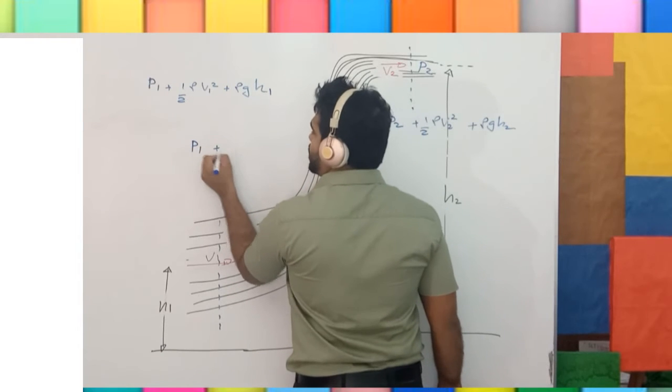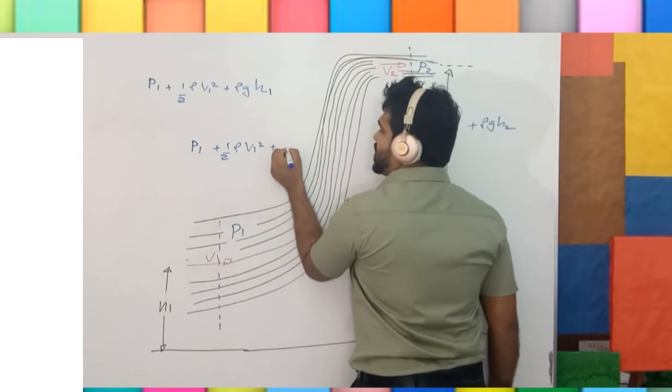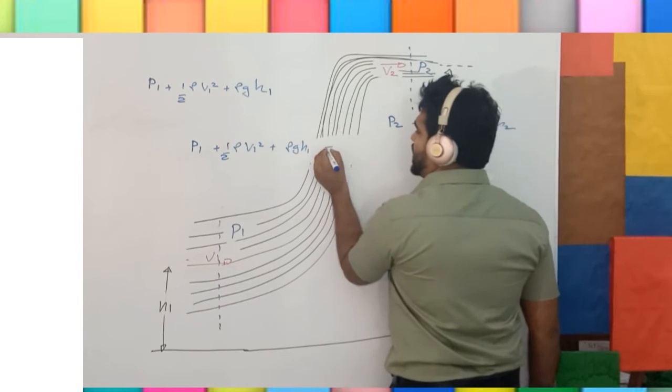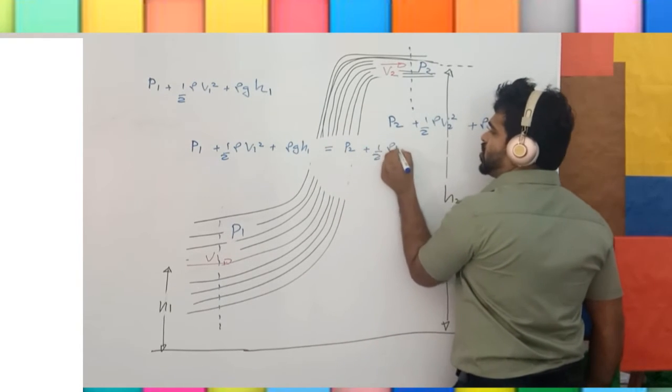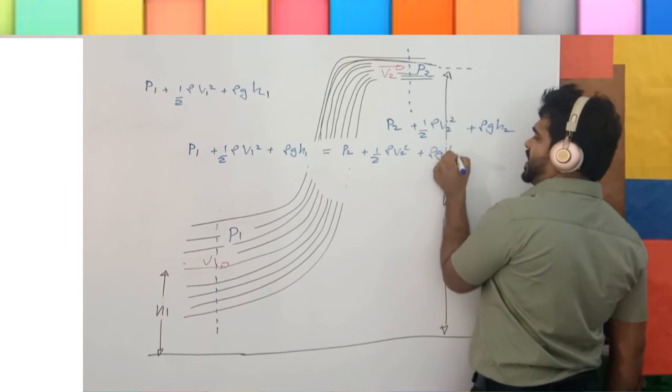p1 plus half rho v1 square plus rho g h1 equals p2 plus half rho v2 square plus rho g h2.